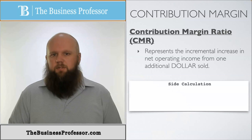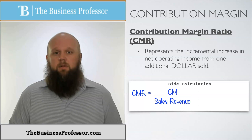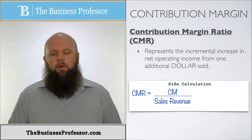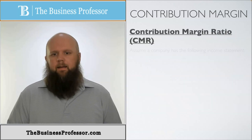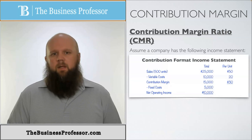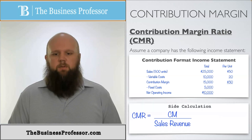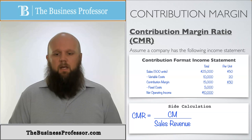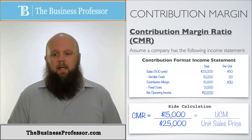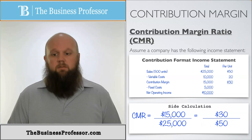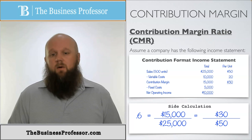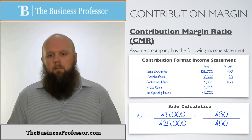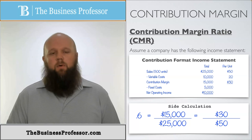The contribution margin ratio has two equivalent equations: total contribution margin divided by total sales revenue, or unit contribution margin divided by unit sales price. Using our example: $15,000 divided by $25,000, or equivalently $30 divided by $50, both equal 0.6. This means for every one extra dollar sold, net operating income increases by $0.60. That is the importance of contribution margin and contribution margin ratio.